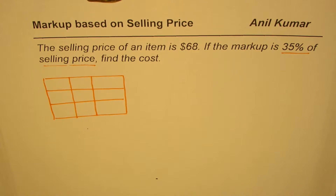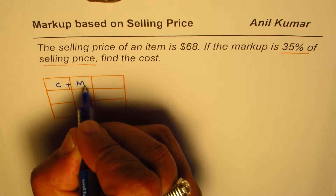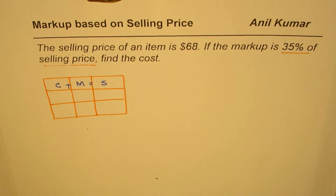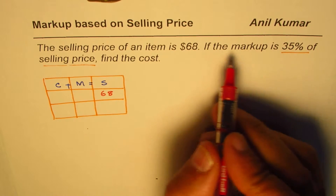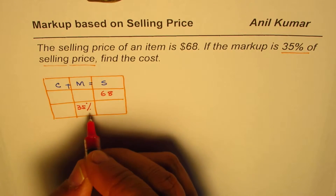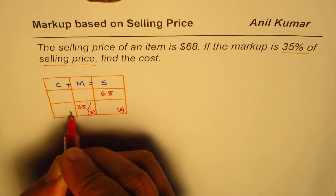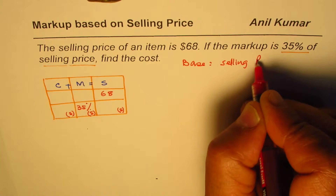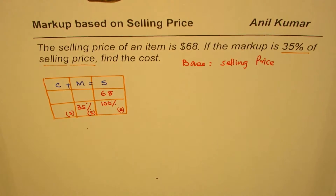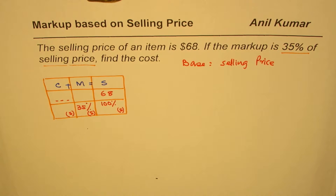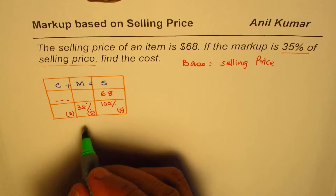So let's write down: cost plus markup equals selling price. We are given the selling price of $68, and the markup is 35%. This markup is on selling price, so selling price is the base. Therefore we take selling price as 100%. That is the information given to us, and we need to find the cost price.